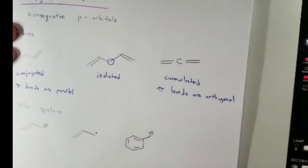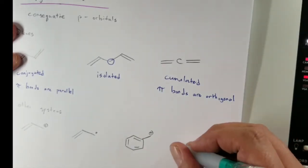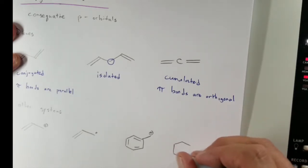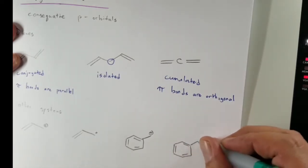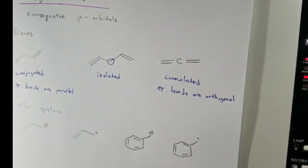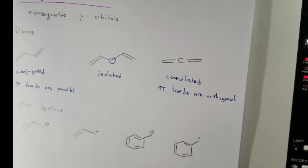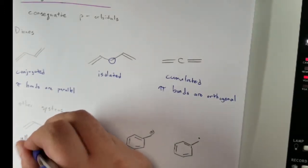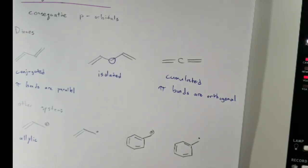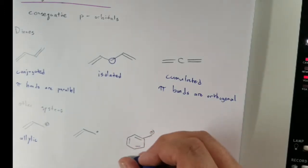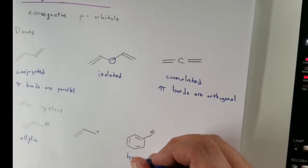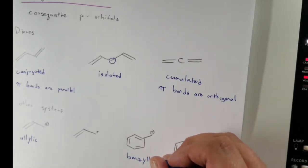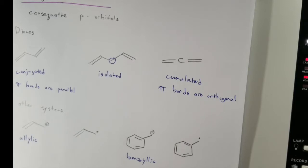Notice here it's one away from a double bond — that's allylic. Vinyl is when it's directly on the double bond, and the case where it's one away from the ring is benzylic. If it's straight on the ring, it's phenyl.